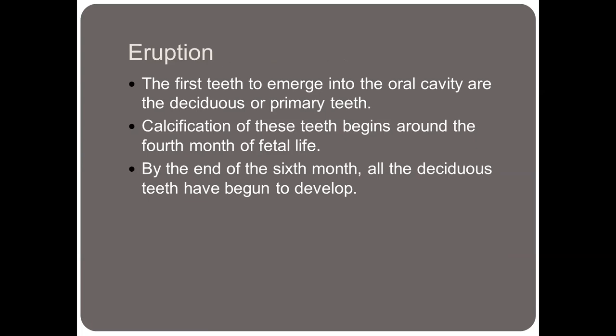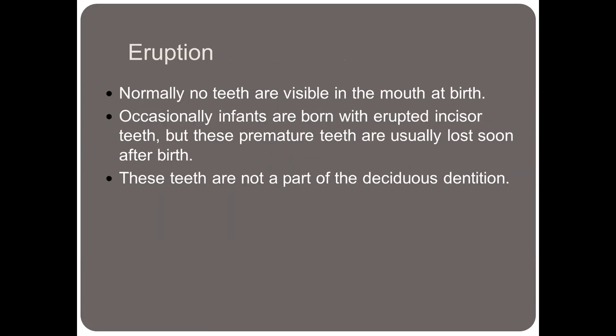The first teeth to emerge into the oral cavity are the deciduous or primary teeth. Calcification of these teeth begins around the fourth month of fetal life. By the end of the sixth month, all the deciduous teeth have begun to develop. Normally no teeth are visible in the mouth at birth, but occasionally infants are born with erupted incisor teeth; however, these are premature teeth and are usually lost after birth, so they are not considered part of the deciduous dentition.